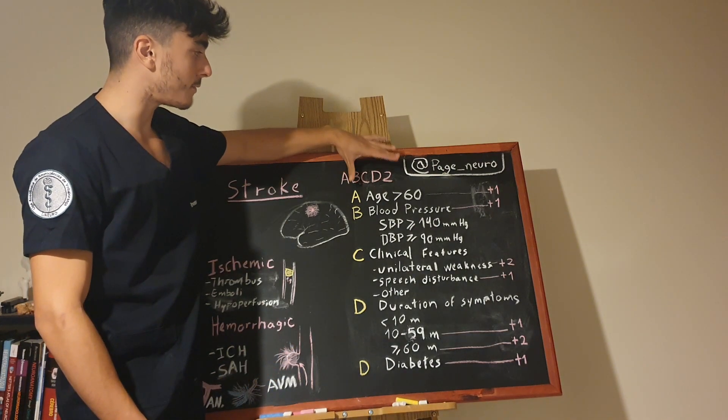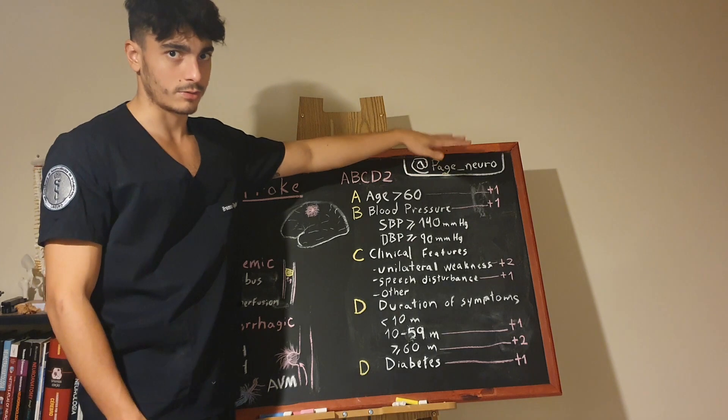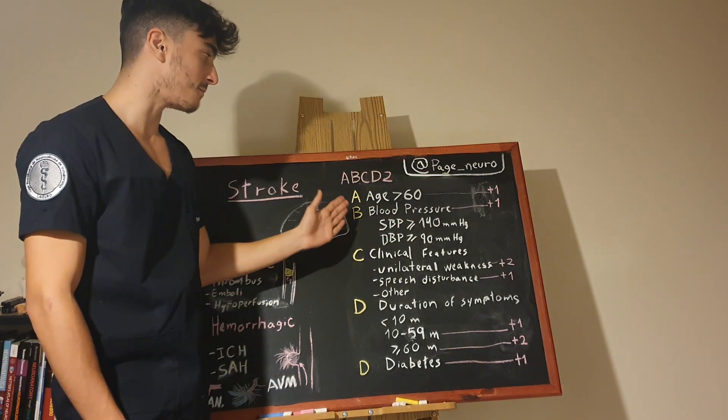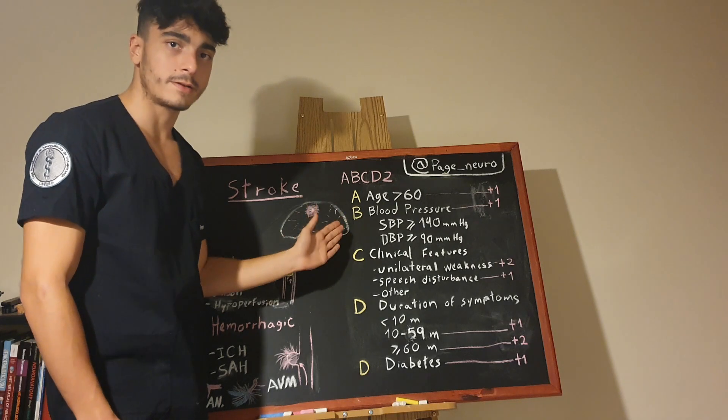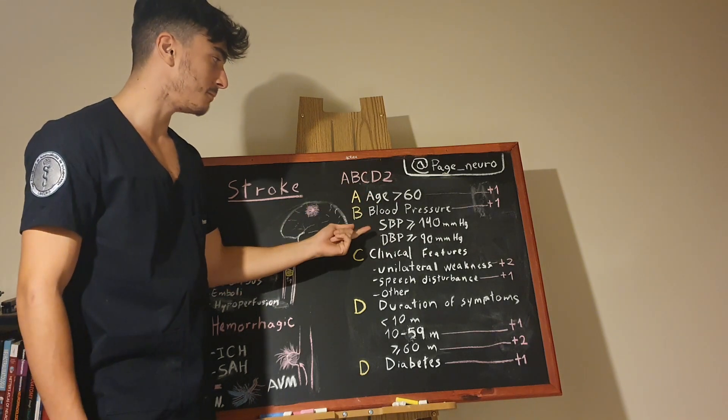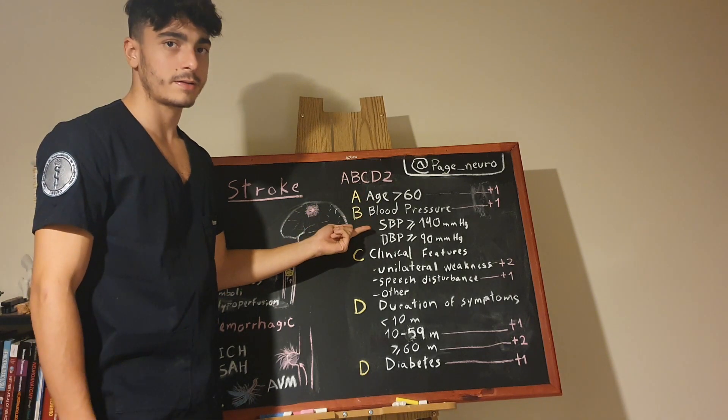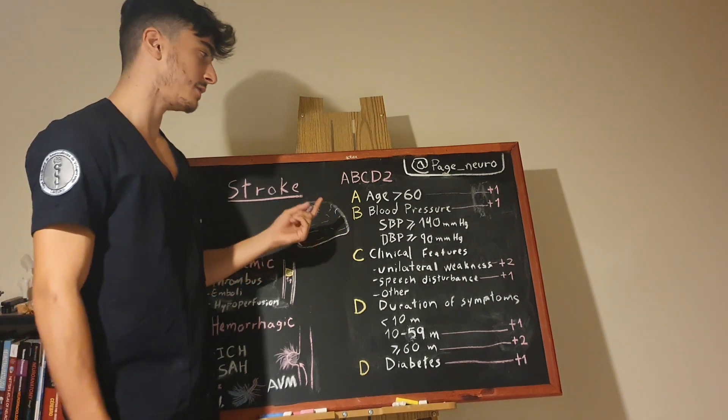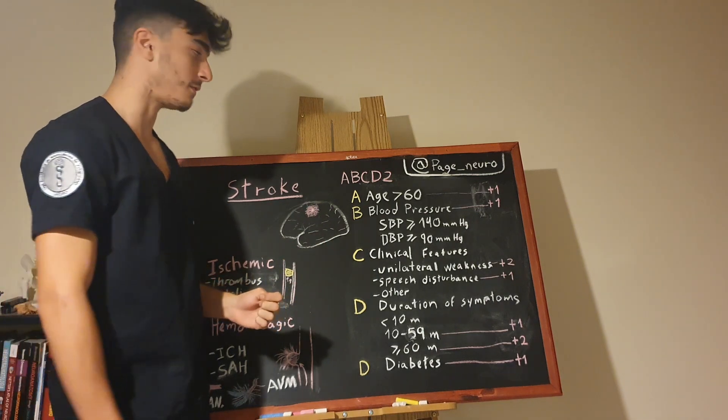And okay, A would stand for age older than 60 years old. So, one point. B for blood pressure. Another point, if the systolic blood pressure is greater than 140 millimeters, or the diastolic blood pressure is greater than 90 millimeters of mercury.